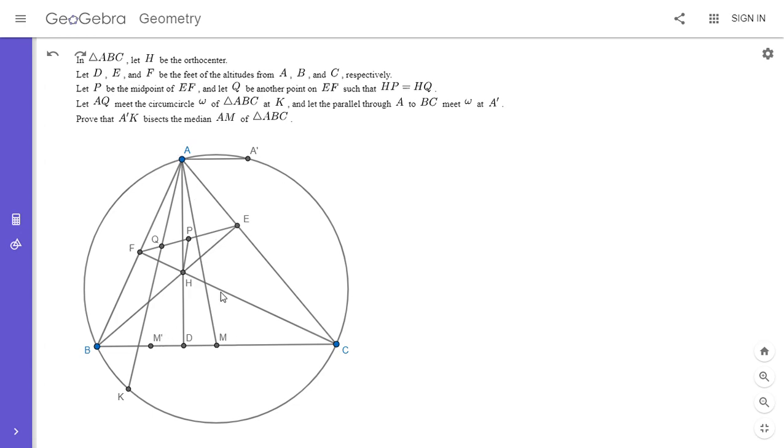So the problem's equivalent to showing that A', M', and K are collinear, which looks like it might be a little easier. So I'm going to go with that approach.